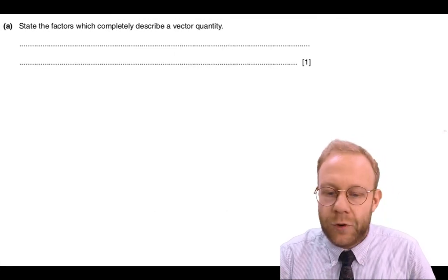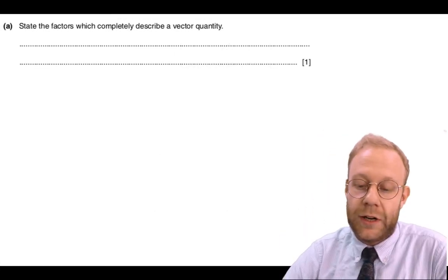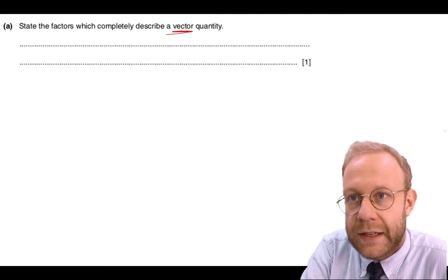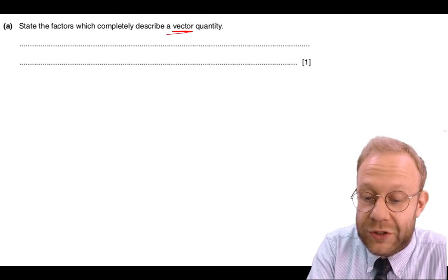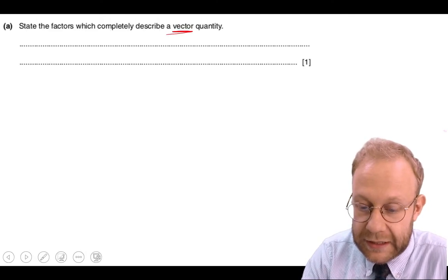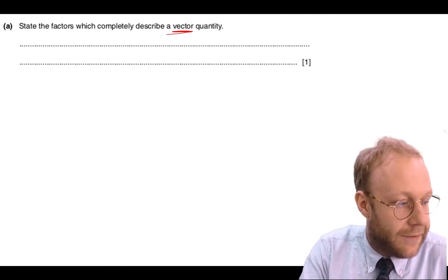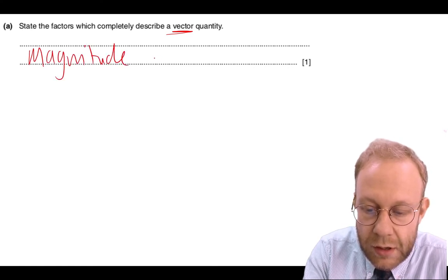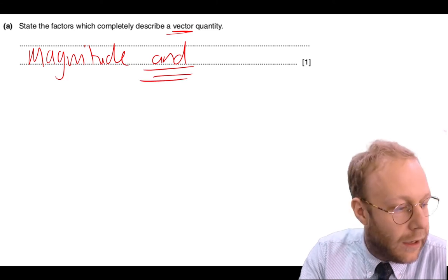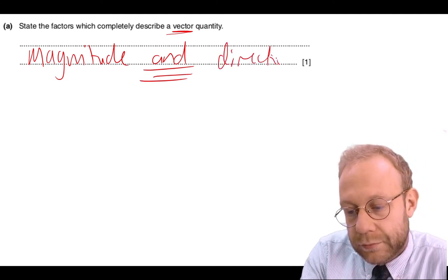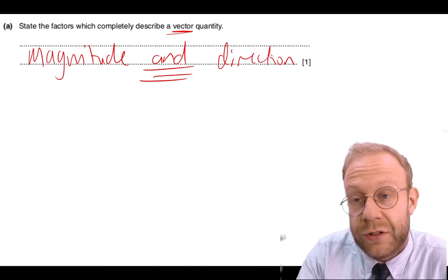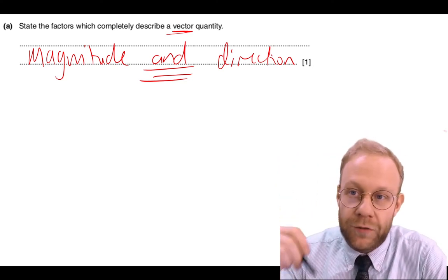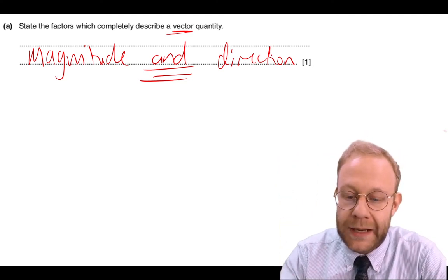For question 9, we're asked to state the factors which completely describe a vector quantity. Quite a number of students gave examples of vectors or just listed things that vectors have. What you need to say is that a vector has both magnitude and direction. Some of you wrote magnitude or direction — it needs to be both. Vectors have both magnitude and direction.